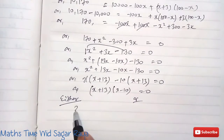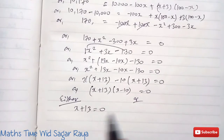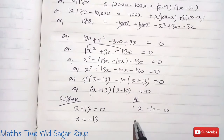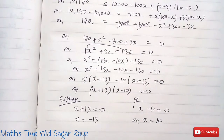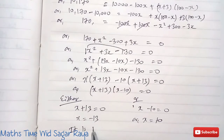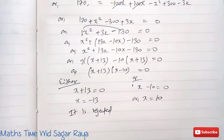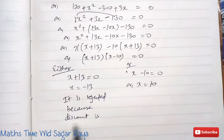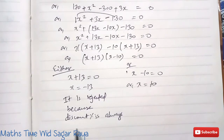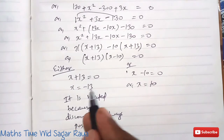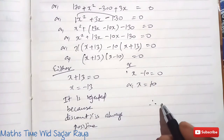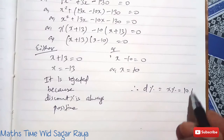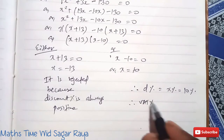By the zero product rule: either X plus 13 equals 0, giving X equals minus 13, or X minus 10 equals 0, giving X equals 10. The case X equals minus 13 is rejected because discount percent is always positive. So our discount percent X equals 10 percent.